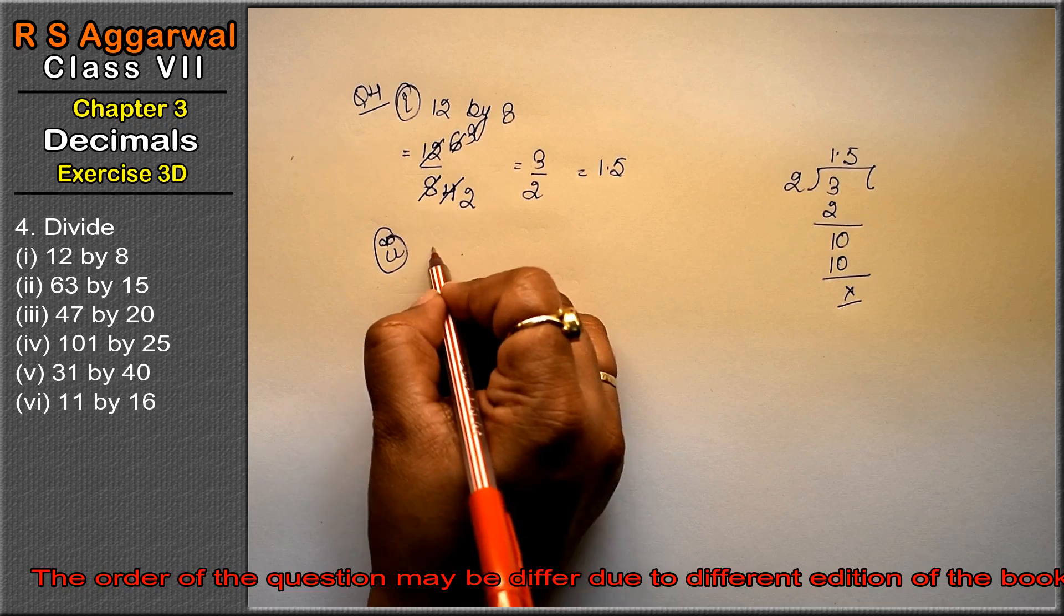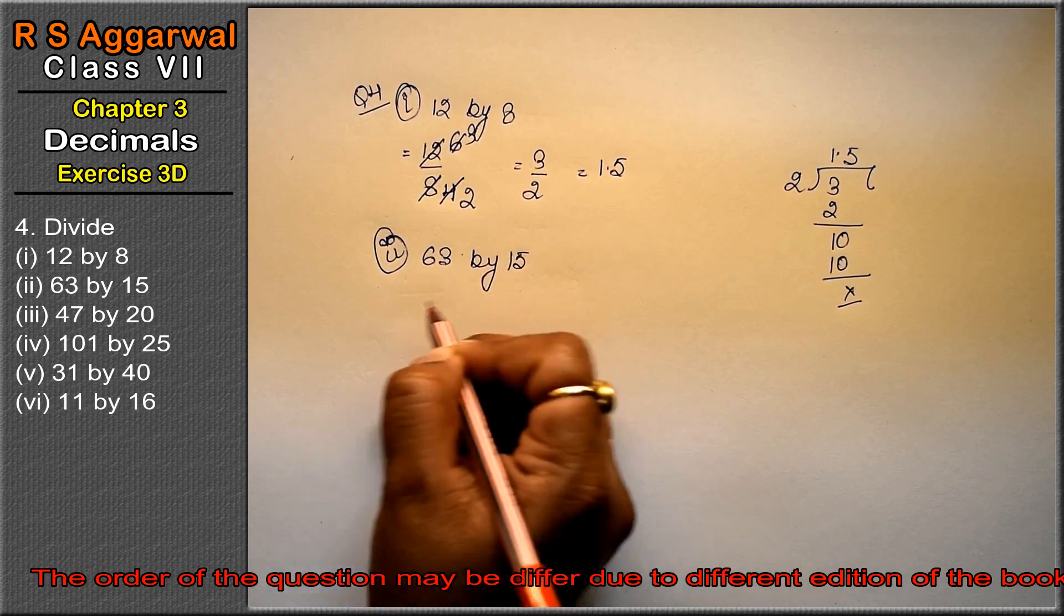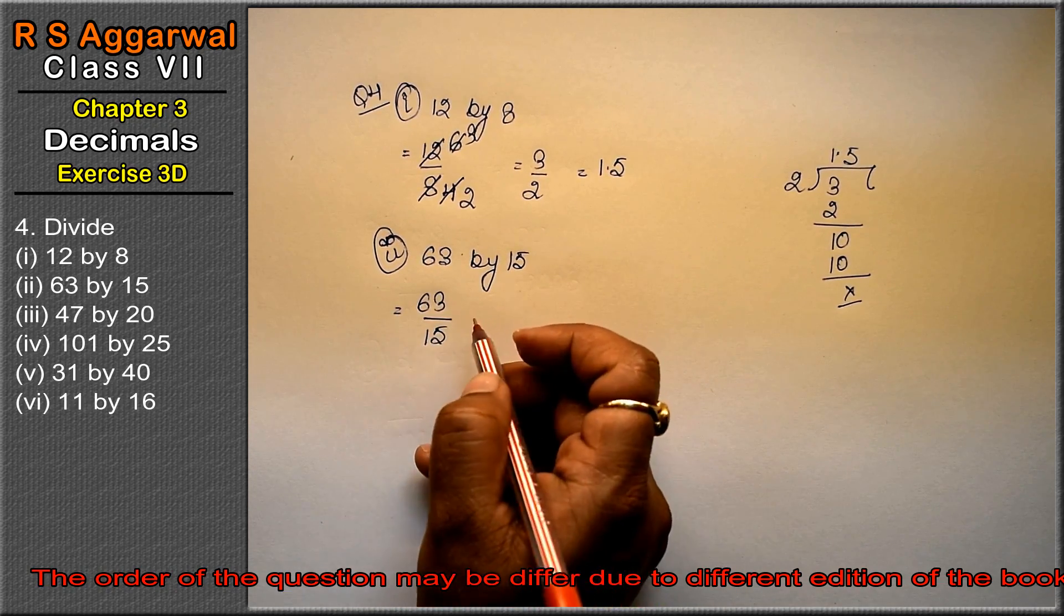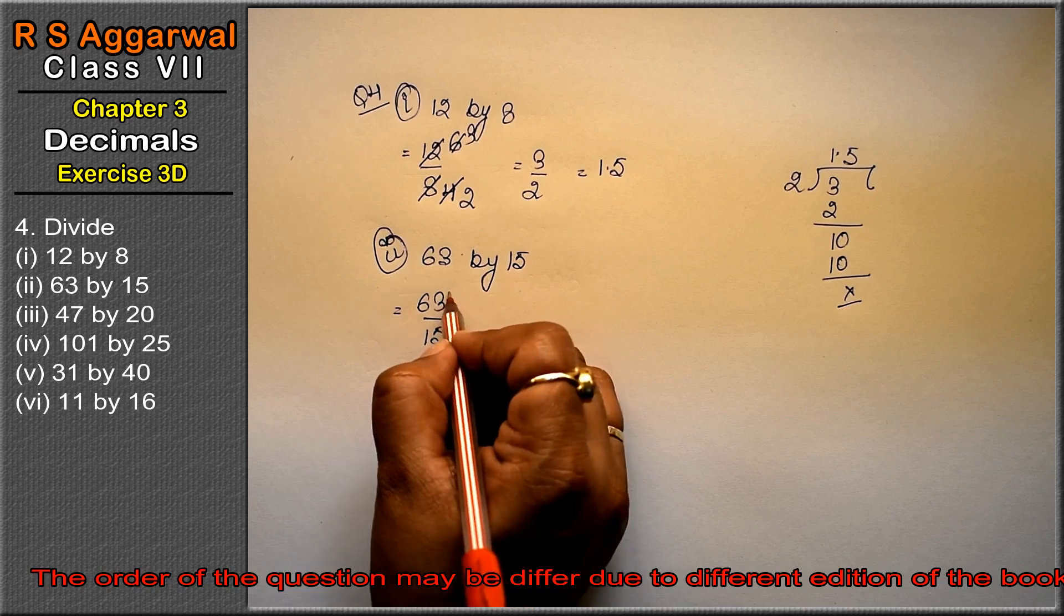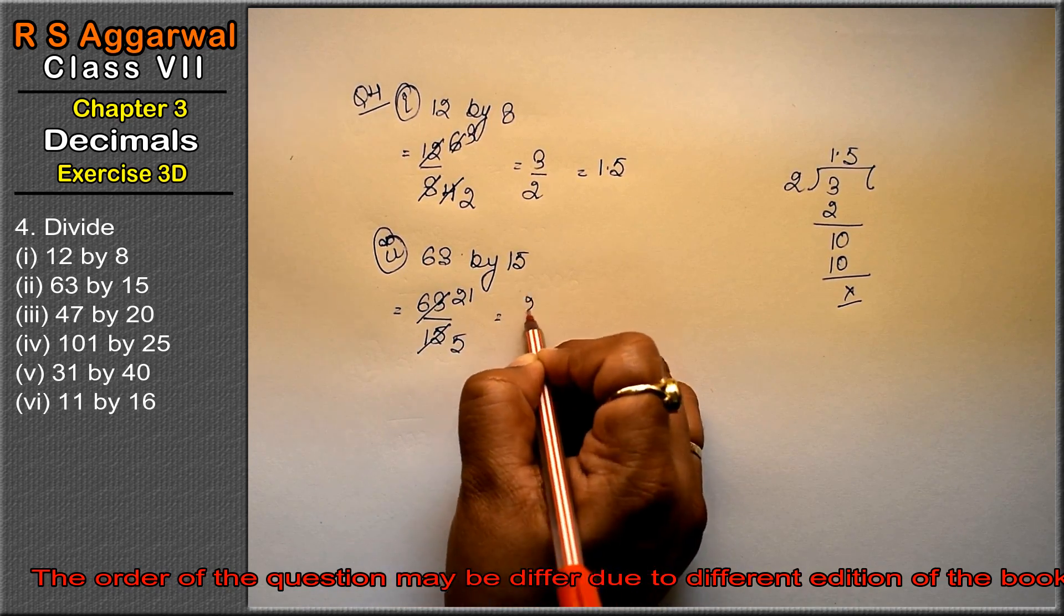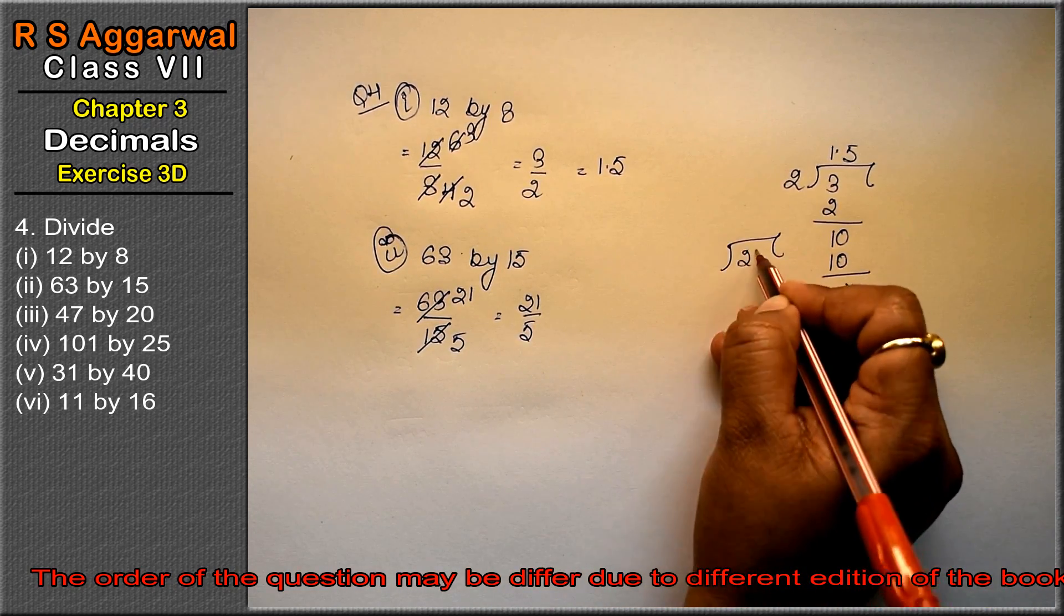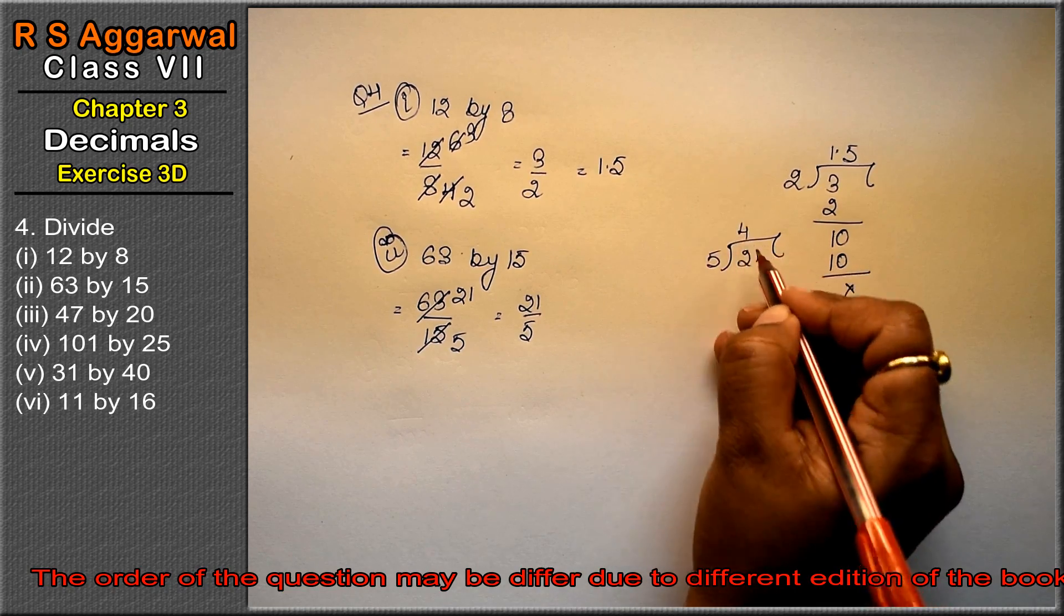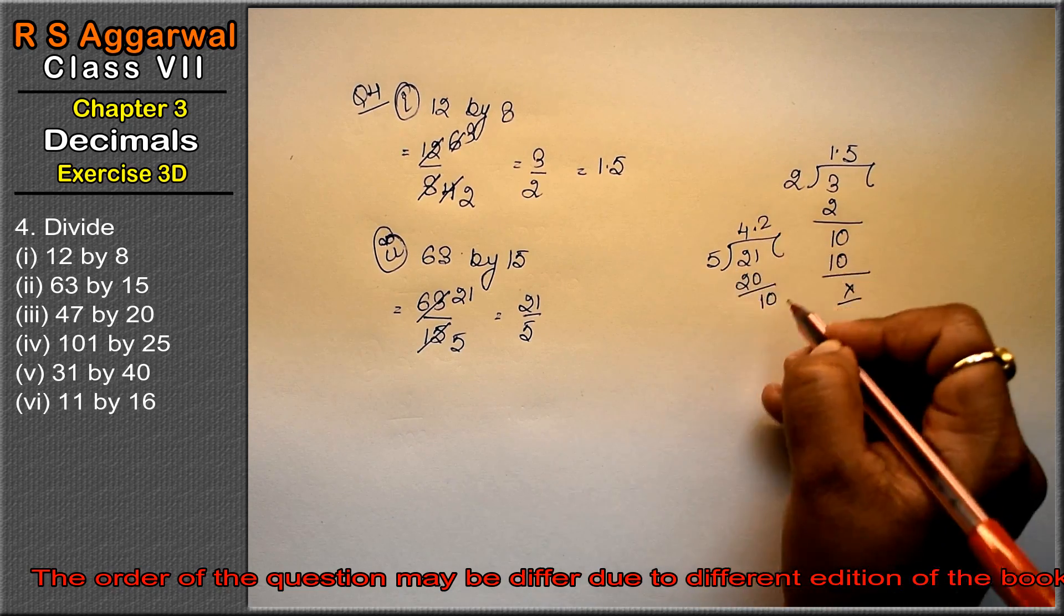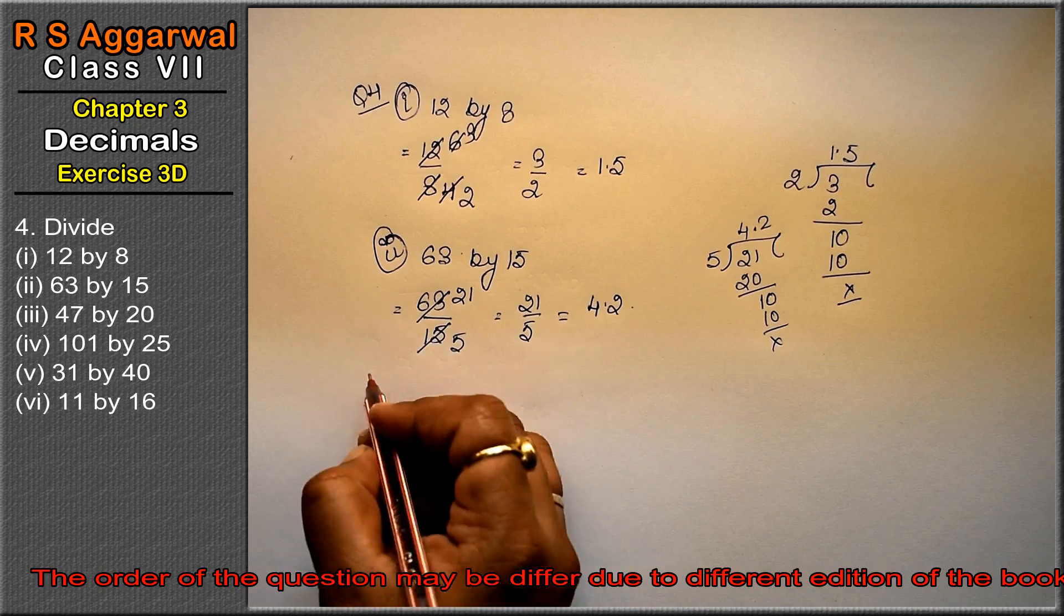Second part is 63 by 15. So 63 divided by 15. This can be simplified by 3: 3×21 is 63, 3×5 is 15. So now this is 21 divided by 5. 5 goes into 21 four times, which is 20, with 1 left. Adding the decimal point: 5 goes into 10 twice. So the answer is 4.2.